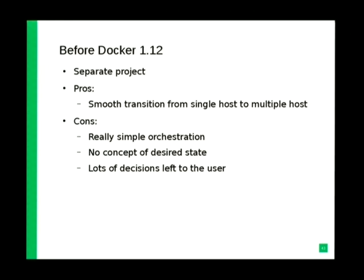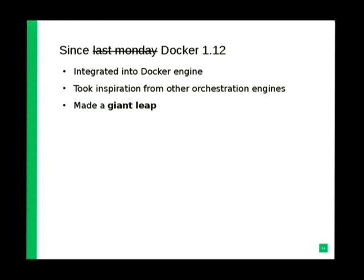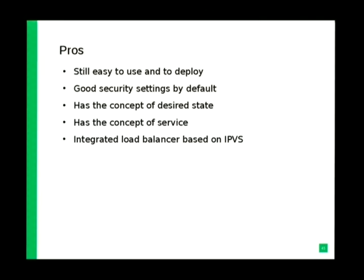However, with 1.12 — announced last Monday — they basically merged Swarm into the Docker engine itself. The old Swarm project no longer exists; there's now SwarmKit, a generic framework for building orchestrators, incorporated directly into Docker. They made a lot of changes compared to the old Swarm — it's a huge step forward. They took inspiration from orchestration engines like Kubernetes and copied some concepts. While it's still really easy to deploy, you now get the desired state, service discovery, and an integrated load balancer using IPVS, which is a kernel-level feature that works really well.